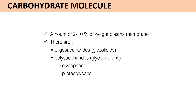The last molecule making up the cell membrane is carbohydrate, about 2 to 10% by weight of the cell membrane. Some are oligosaccharides called glycolipids, and some are polysaccharides called glycoproteins. There are two types of glycoproteins: glycoproteins and proteoglycans.